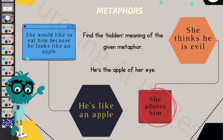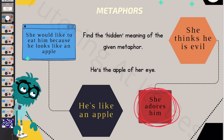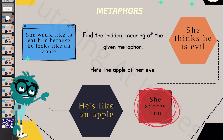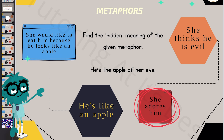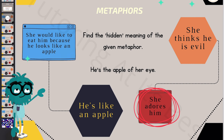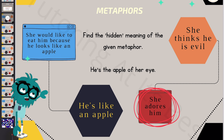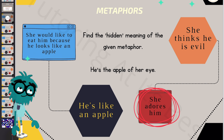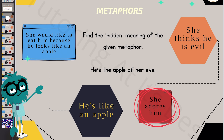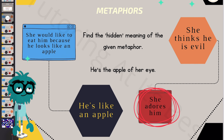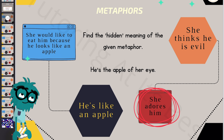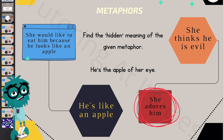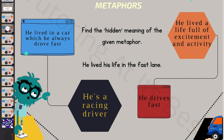If you chose that she adores him, then you are absolutely correct. 'Apple of her eye.' And if you don't understand anything, I want you to search it up and find the definition, so next time you can embed this in your everyday English. Let's go for the second question.